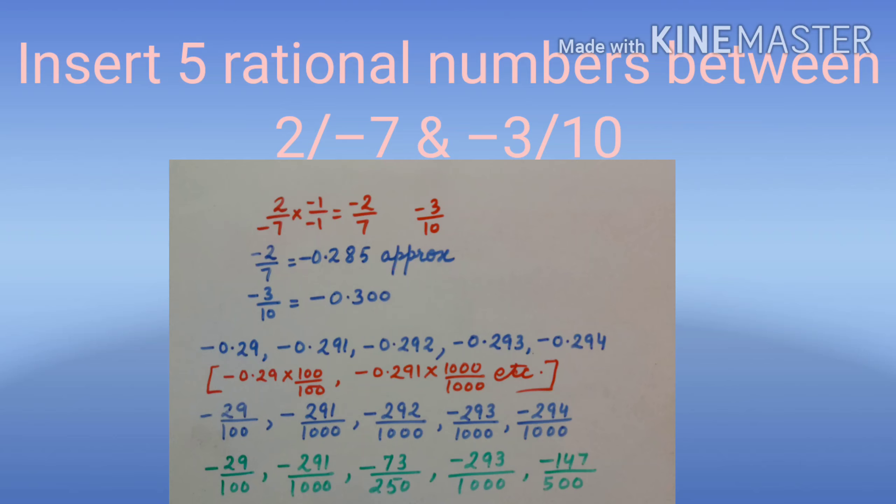Now, we can write any five decimal numbers between minus 0.285 and minus 0.300. We can insert any 15 here. We can take any 5 from those 15. Let's take minus 0.29, minus 0.291, minus 0.292, and so on.